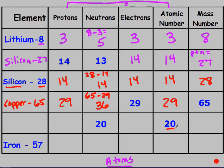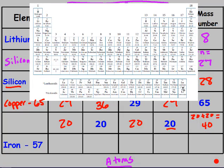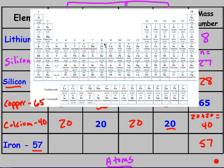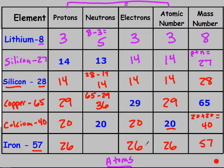For atomic number 20: 20 protons, 20 electrons. Mass number = 20 plus 20 = 40. Atomic number 20 on the periodic table is calcium, so calcium-40. For the last row with a mass number of 57, looking up iron on the periodic table gives atomic number 26. So 26 protons and 26 electrons, and 57 minus 26 = 31 neutrons.